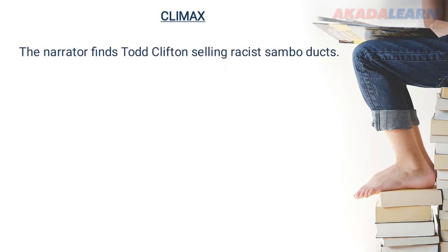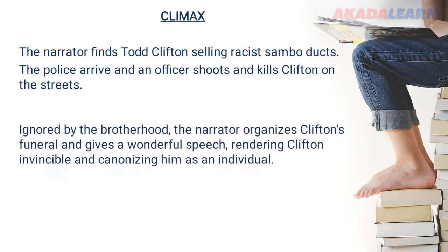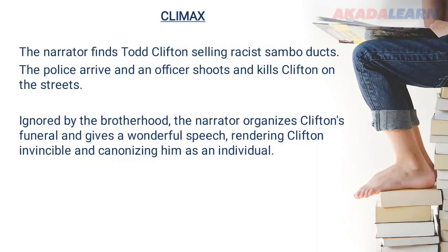In the climax of the story, the narrator finds Tod Clifton selling racist Sambo dolls — ugly dolls that portray black people in a very bad light. The police arrive and an officer shoots and kills Clifton on the street. Ignored by the Brotherhood, the narrator takes it upon himself to organize Clifton's funeral and gives a powerful speech honoring him as a man of utmost respect.